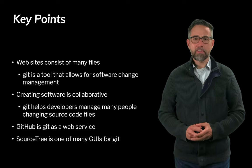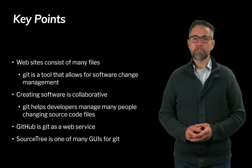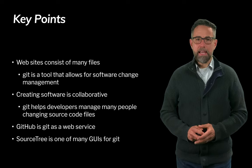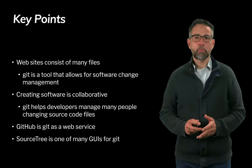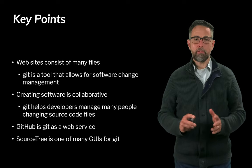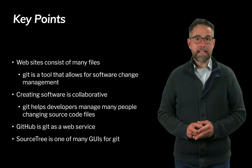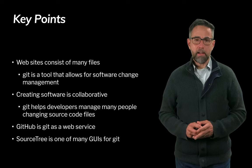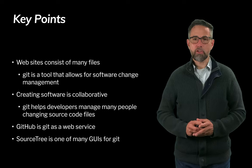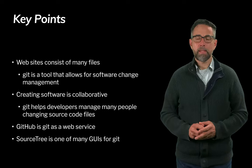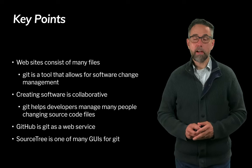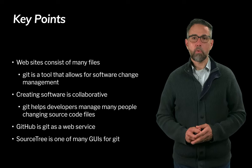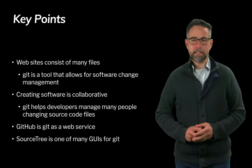Websites consist of many files and Git is a tool that allows for what we call software change management. Creating software is very collaborative — in contrast to the stereotype of a programmer working alone, real software is done in teams with a lot of communication and coordination. Git helps developers manage many people and many software code files. GitHub is a web-based service that works closely with Git. SourceTree is one of many GUIs available to work with Git.